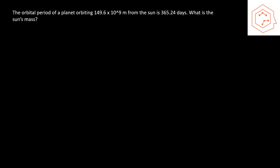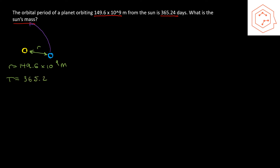For question two, a planet orbits the sun at 149.6×10⁹ meters with an orbital period of 365.24 days. We are asked to find the mass of the sun. Converting the period to SI units: 365.24 × 24 × 60 × 60 = 3.1556×10⁷ seconds.